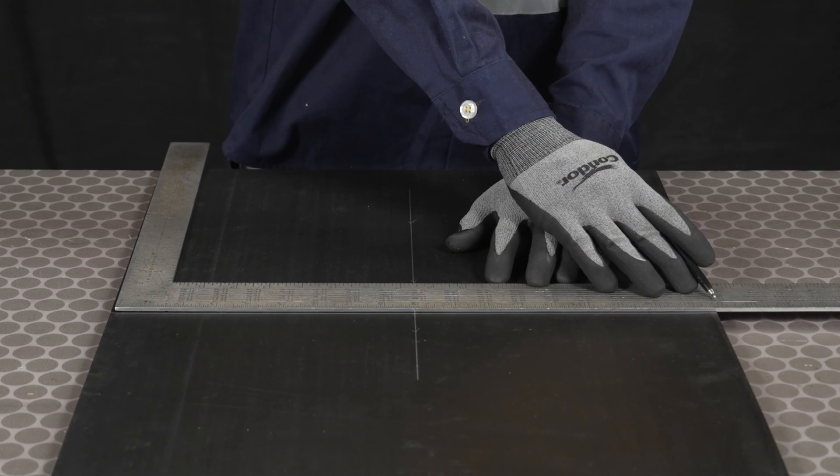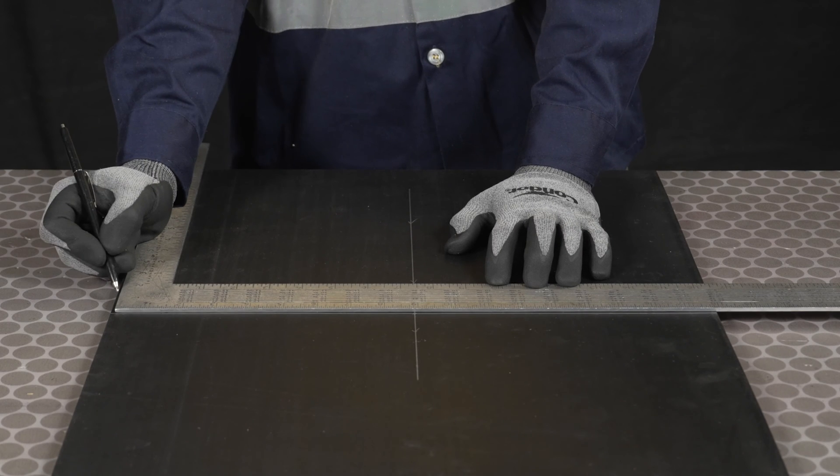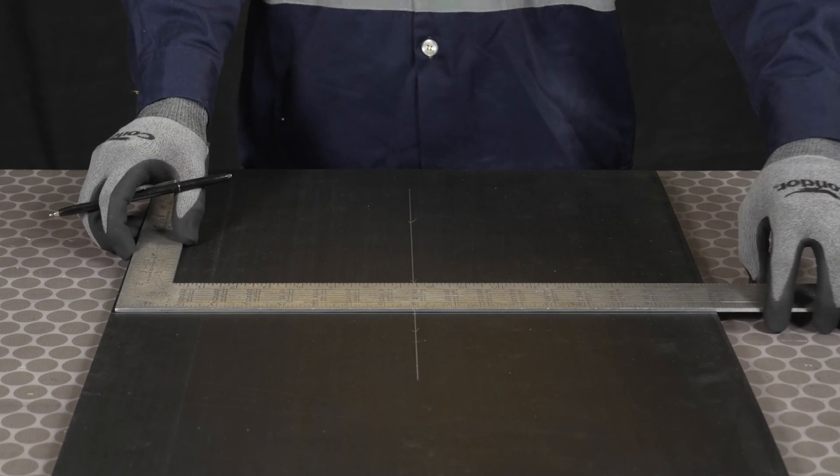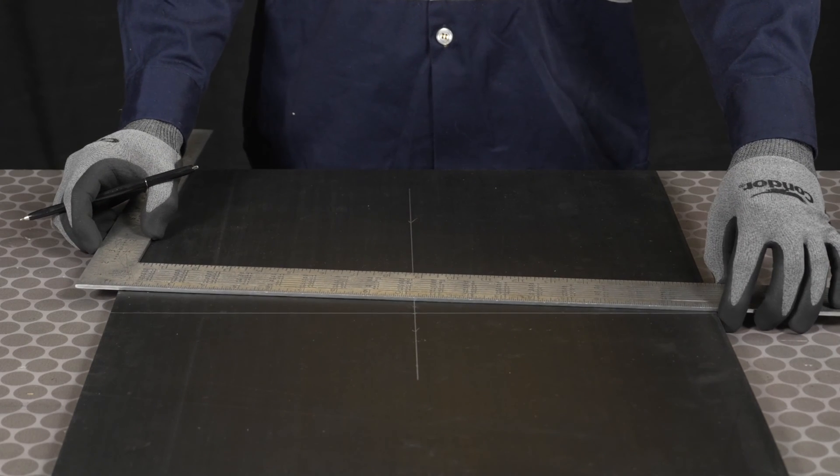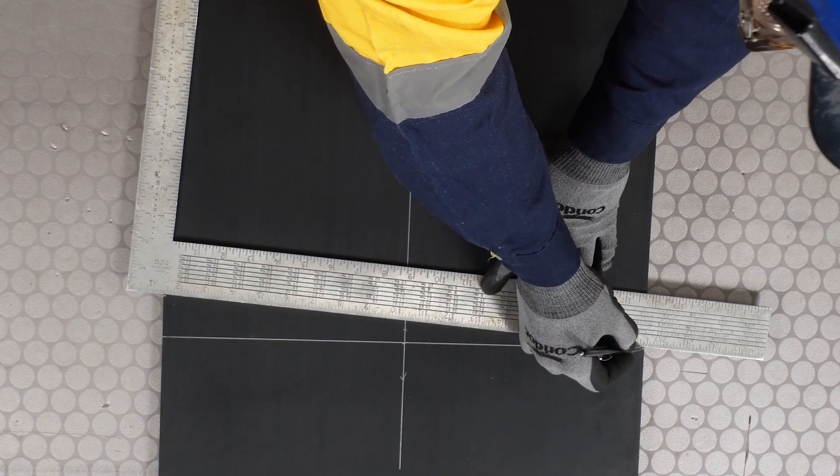To create the bias cut lines, measure off one end of the squared line a distance equal to one twelfth of the belt width. Ensure the orientation of the line is correct for the orientation of the splice. Draw the bias line.